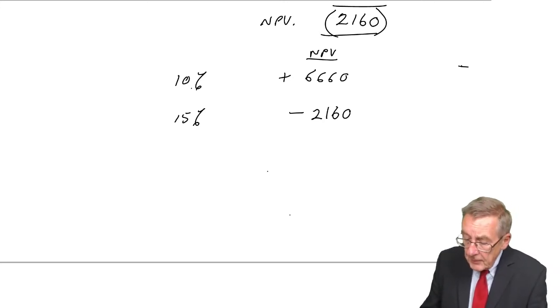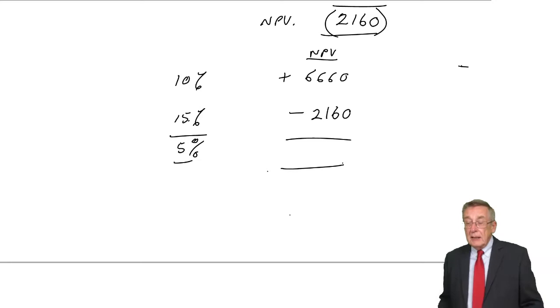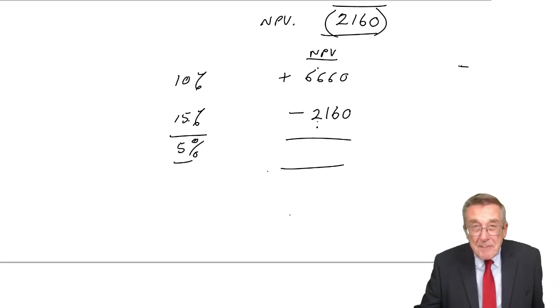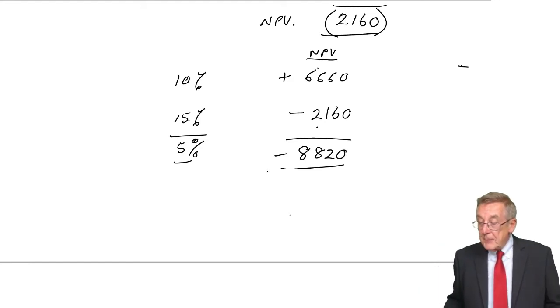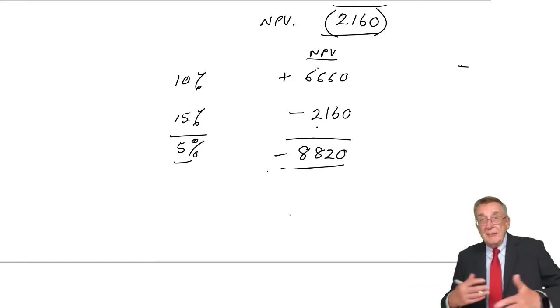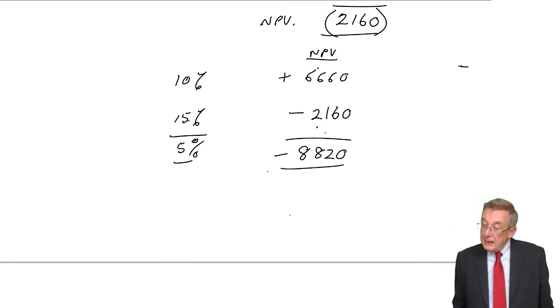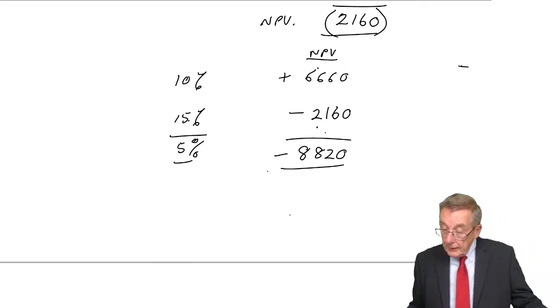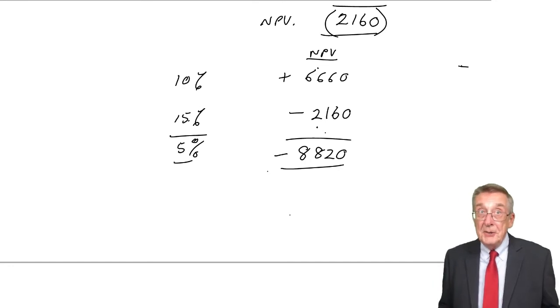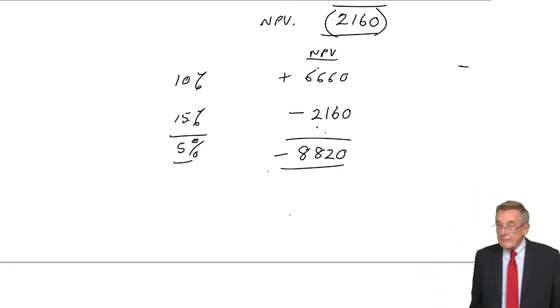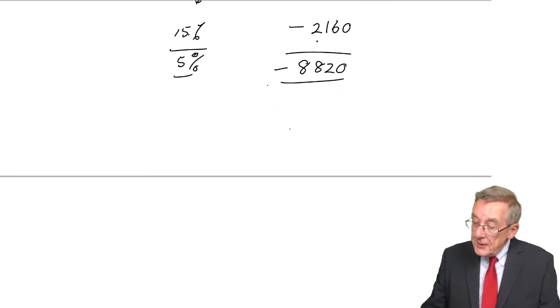Between 10 and 15 is a change of five percentages. What happened to the NPV? It fell from plus 6 to minus 2. So in total, it fell by 8,820. Plus 6,660 to minus 2,160, it fell by 8,820.